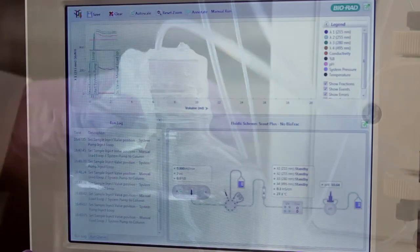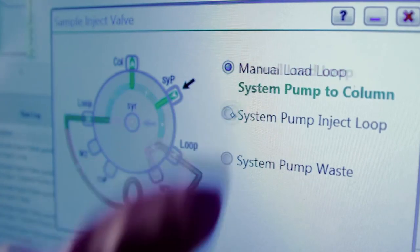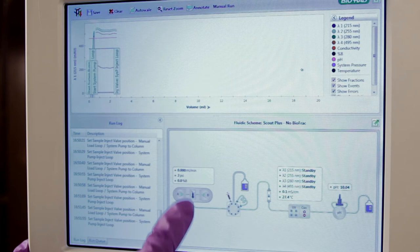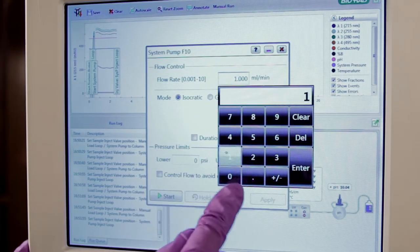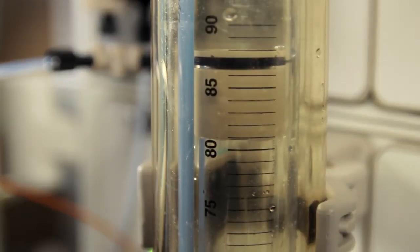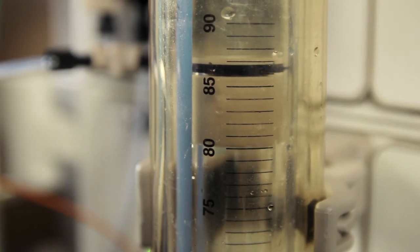Next, prime the Dyna Loop by selecting System Pump Inject Loop on the touchscreen. Use the Pump Maximum Flow Rate to fill the Dyna Loop and purge air from the system. The sliding seal will travel from the maximum volume to 0 mils as air bubbles are forced from the system.